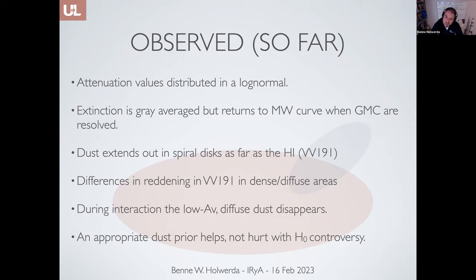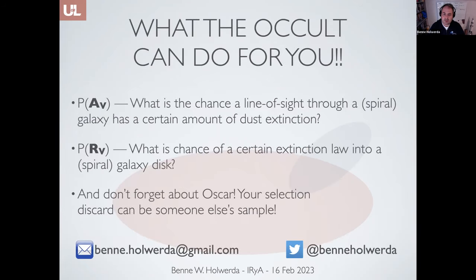So that's what we've had. I talked a little too fast — I was nervous — but that means I have some time for questions. What can occulting galaxy pairs do for you? They can give you a probability distribution: how much extinction you hit in your line of sight into a galaxy other than our Milky Way, and if you have enough information, the reddening law as a function of wavelength.